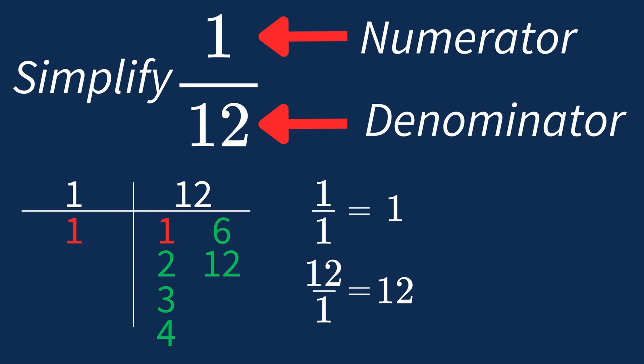So after dividing both the numerator and denominator by their greatest common factor of 1, we end up with the same fraction, 1 over 12.